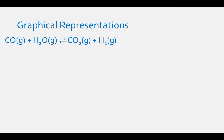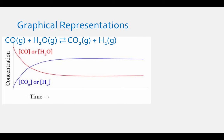For example, for the reaction CO gas plus H2O gas in equilibrium with CO2 gas plus H2 gas, the concentration versus time graph looks like this. As you can see, the concentrations of the reactants decrease and the concentration of the products increase. Equilibrium is reached when the concentrations of the reactants and products are no longer changing. At equilibrium, CO2 and H2 are being formed at the same rate as they are reacting to reform CO and H2O.